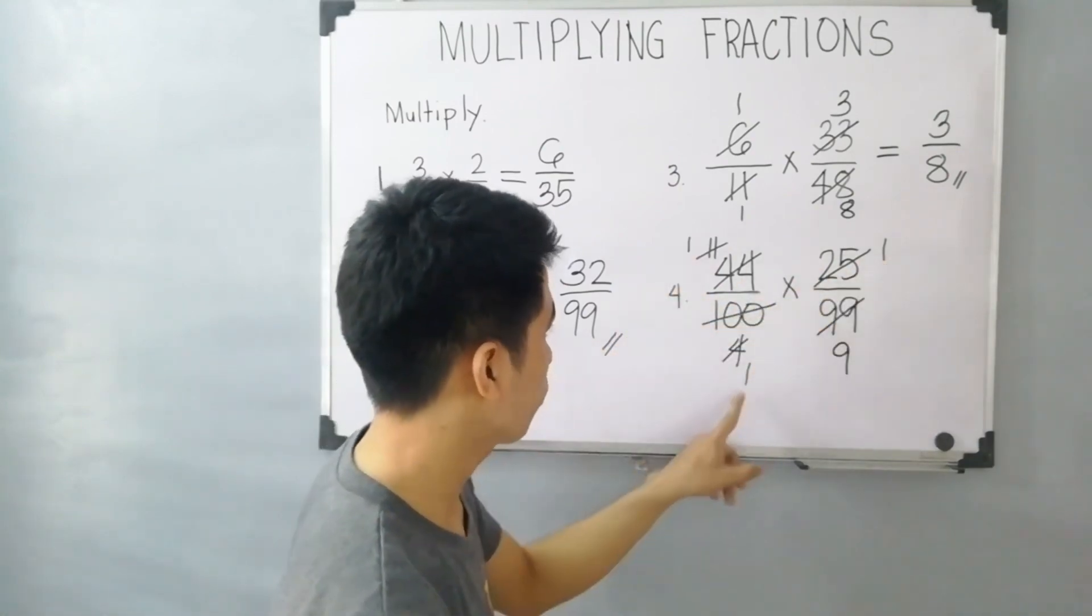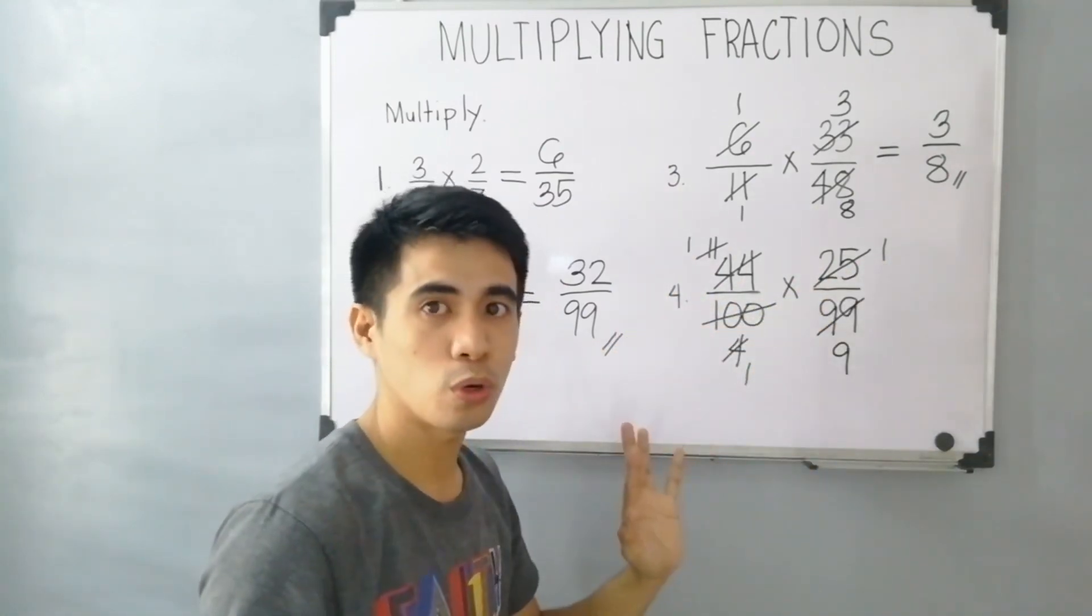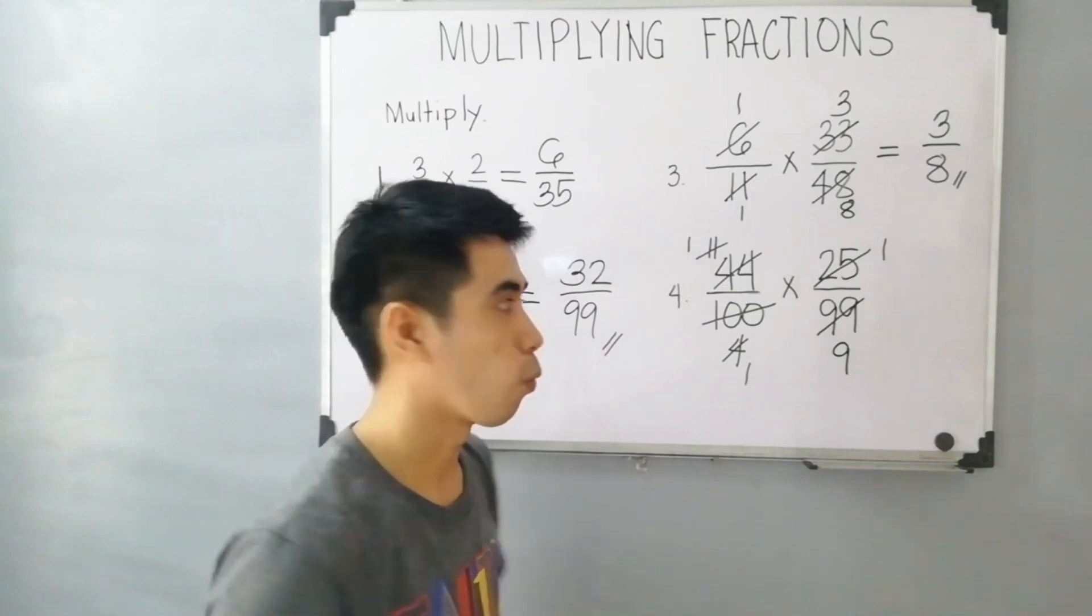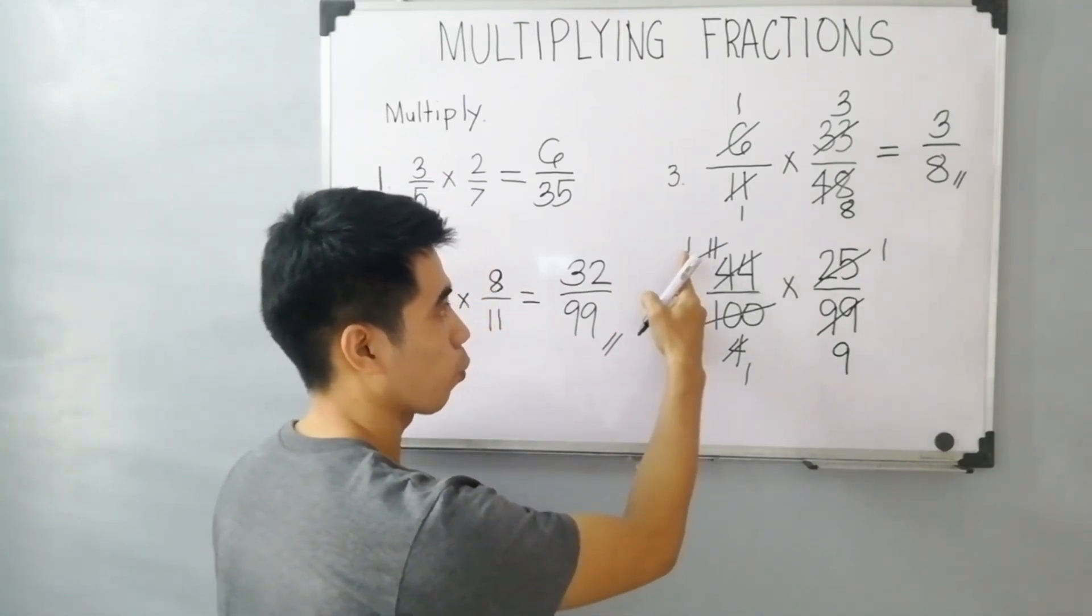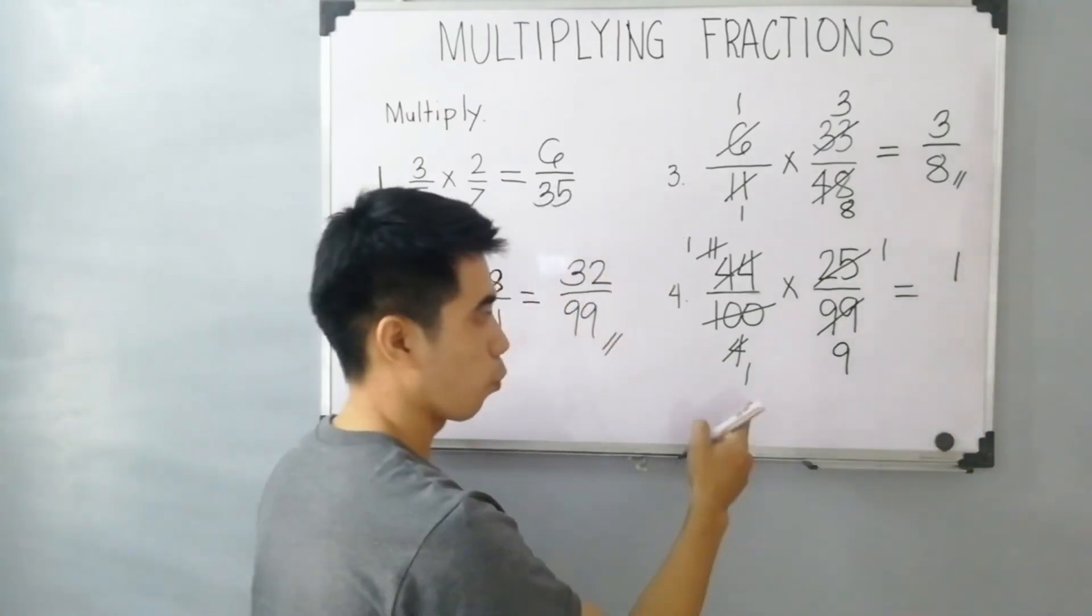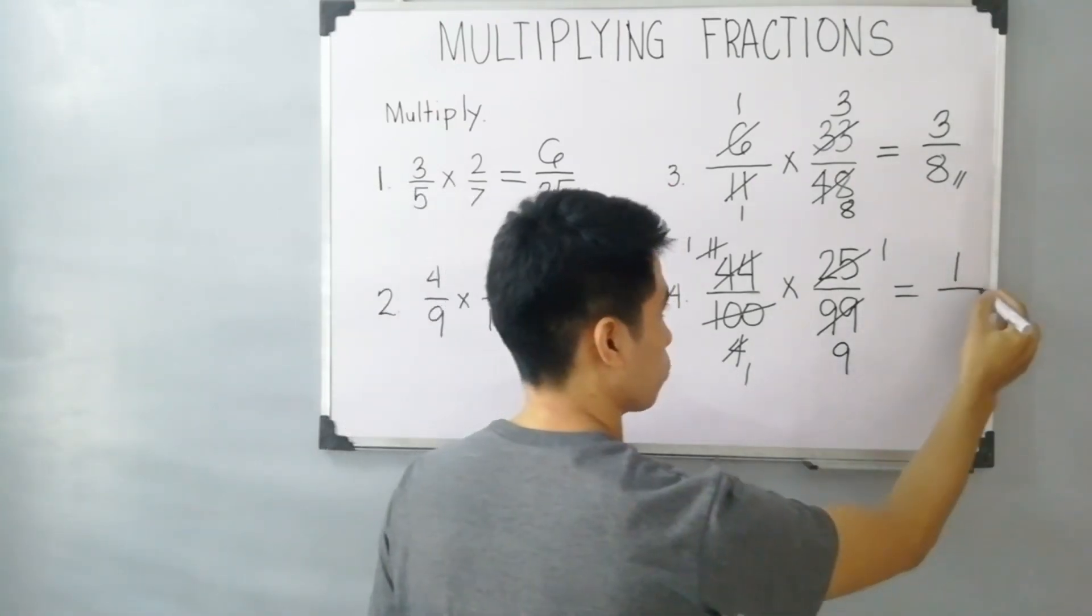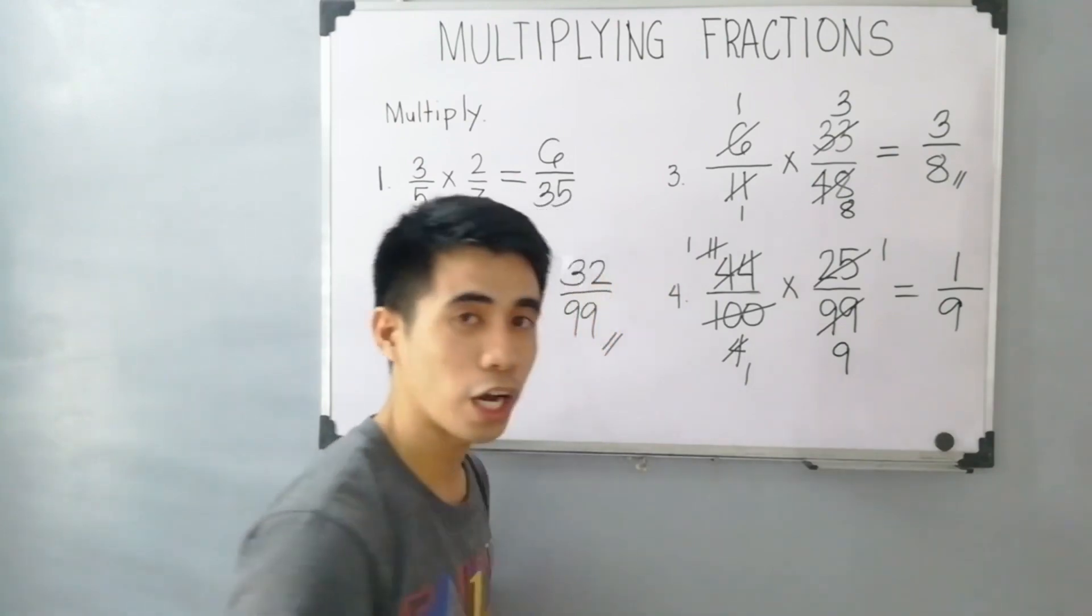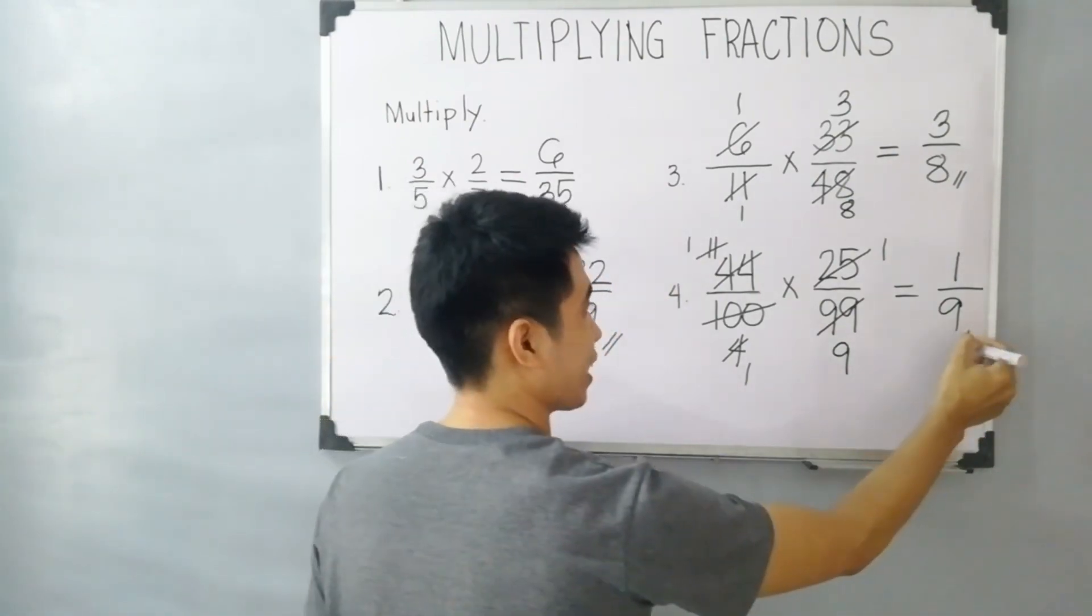1, 1, 1, 9. No other factors aside from 1. Therefore, let's multiply numerators. 1 times 1, this is equal to 1. 1 times 9, this is equal to 9. Therefore, our final answer is 1 over 9.